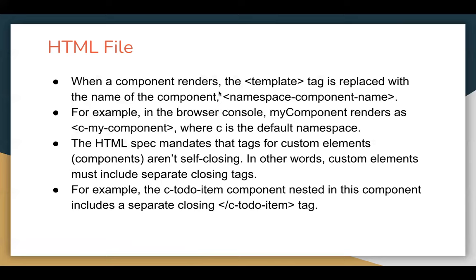When a component renders, the template tag is replaced with the name of the component — like namespace-component-name. For example, in the browser console, myComponent renders as c-my-component, where C is the default namespace. The HTML specification mandates that tags for custom elements are not self-closing; custom elements must include a separate closing tag. So if your component name is to-do-item, its opening tag is c-to-do-item and it must be closed with a separate closing tag.